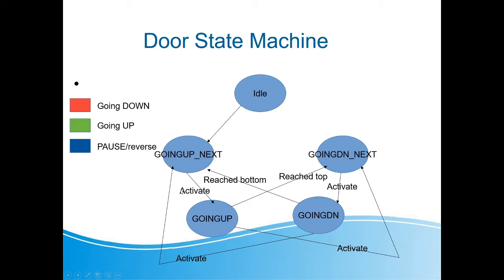You could possibly reverse direction if you hit the activate button in the middle of travel. There is an activate button, two sensor signals for whether you've reached the bottom or the top. When you start in idle, you wake up in 'going up next.' The motor pushes up till it reaches the top, then waits in 'going down next.' Hit activate and it goes down; once it reaches the bottom it waits to go up again, bouncing back and forth.